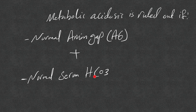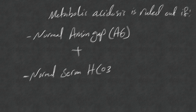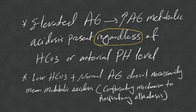Remember: elevated anion gap means high anion gap metabolic acidosis is present, regardless of the bicarb level or arterial pH level. On the other hand, low bicarb with normal anion gap does not necessarily mean metabolic acidosis — it could be a compensatory mechanism for respiratory alkalosis.